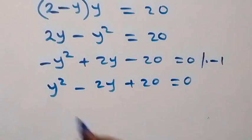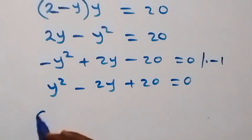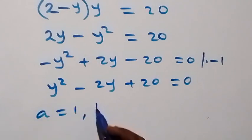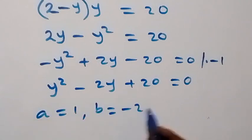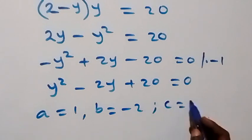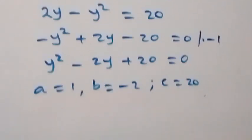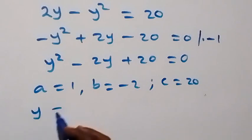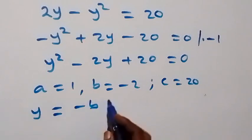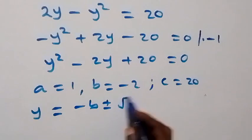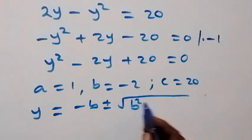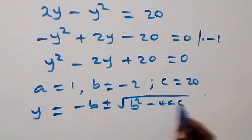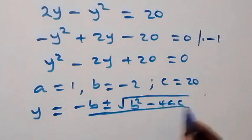This implies we have a quadratic equation, where a equals to 1, b equals to minus 2, and c equals to 20. Applying the quadratic formula: y equals to minus b plus or minus square root of b squared minus 4ac, all over 2a.